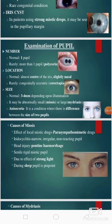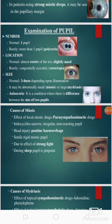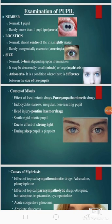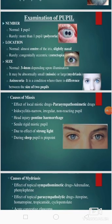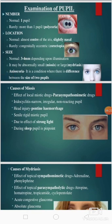Then we should do the examination of the pupil. We should see the number — whether there is one or more than one pupil, as in polycoria. Then we should see the location — whether it is in the normal almost central position of the iris or slightly nasal. Then we should see the size — normally 3 to 4 mm depending on illumination. It may be small in case of miosis and large in case of mydriasis. Anisocoria is the condition where there is a difference between the size of two pupils.